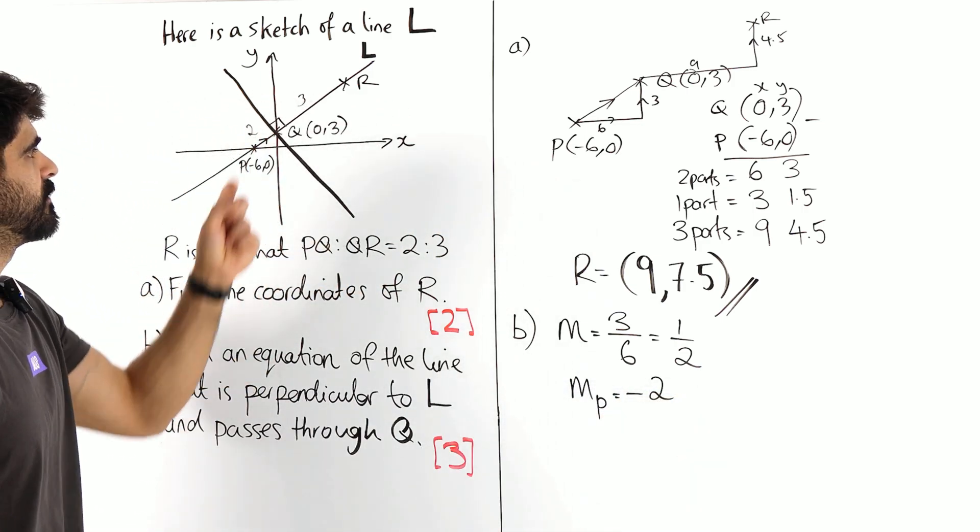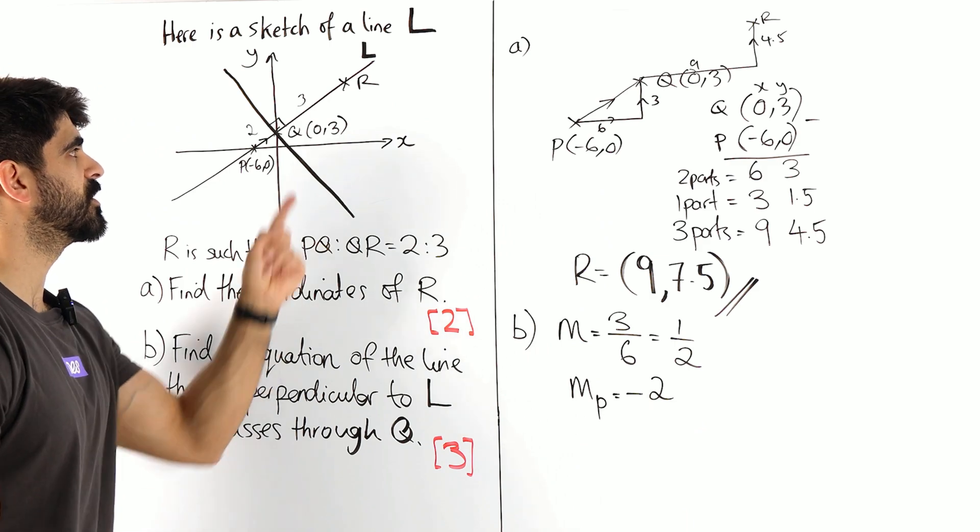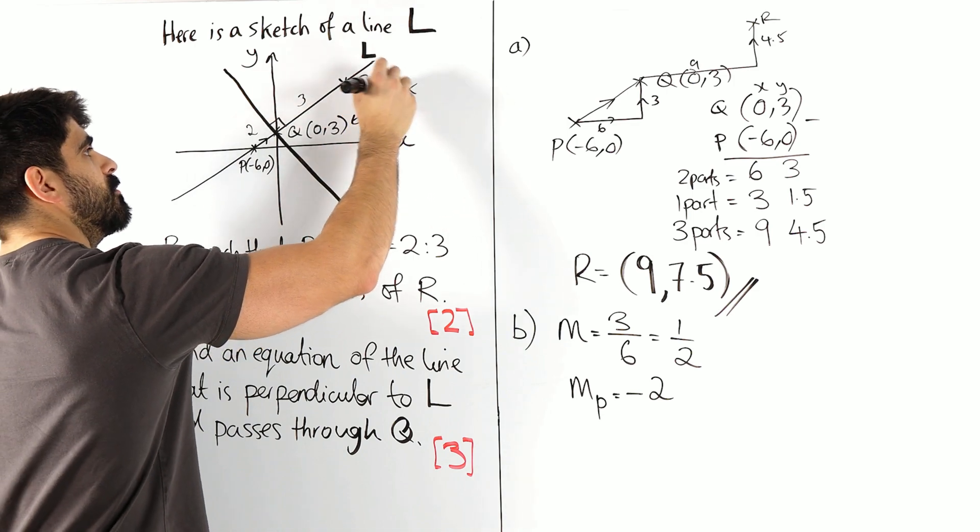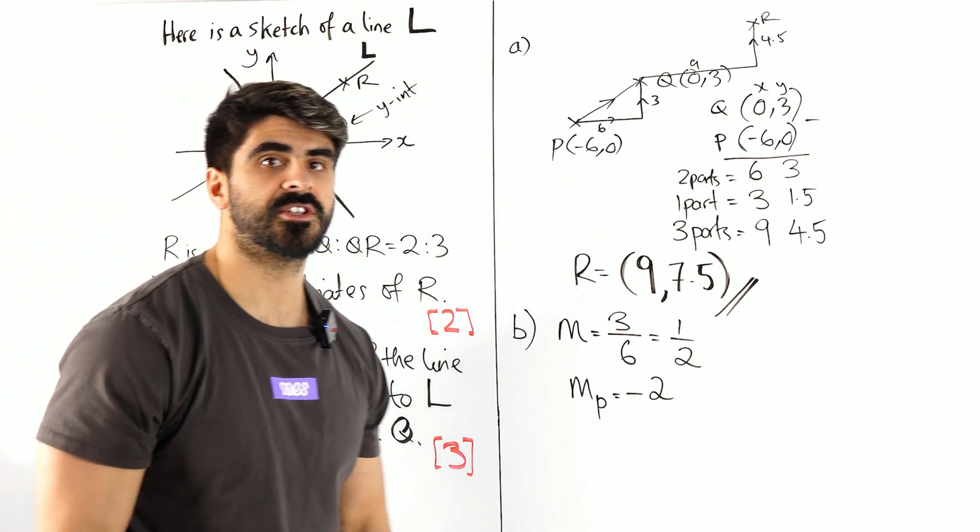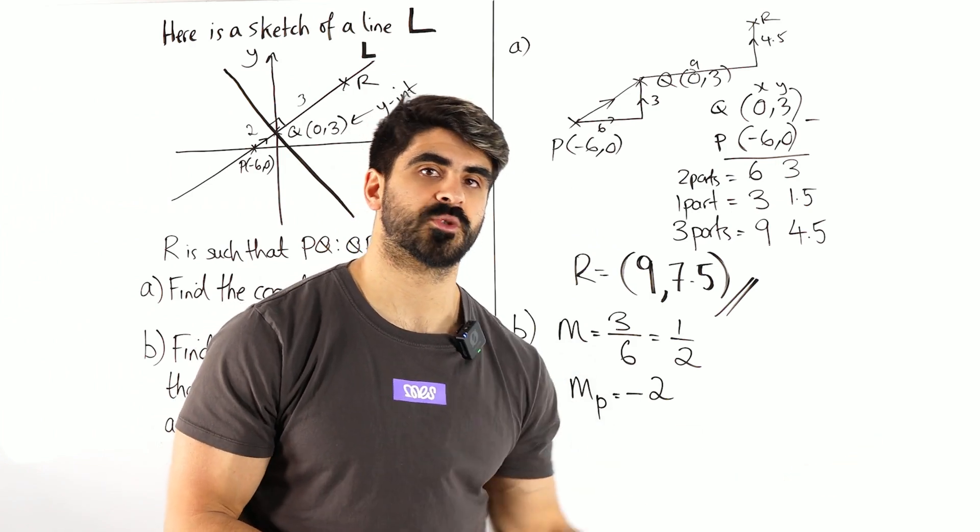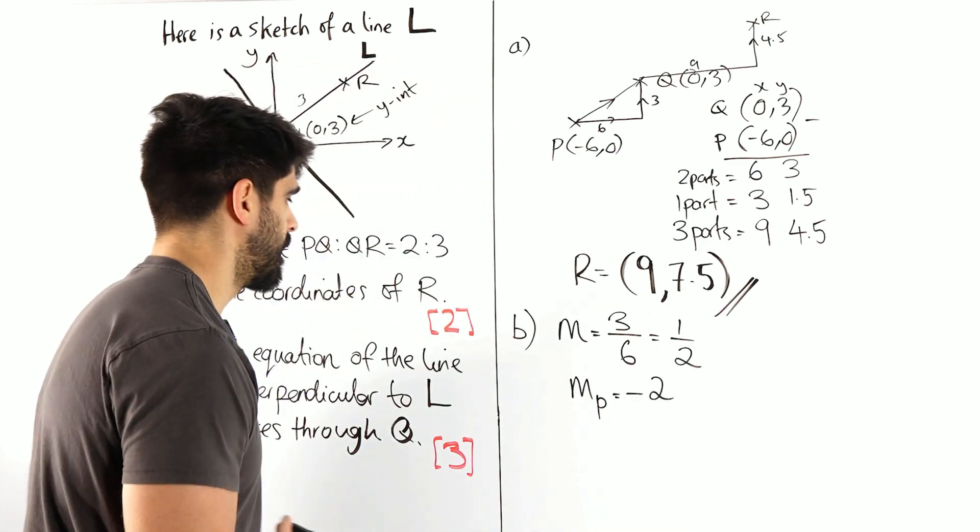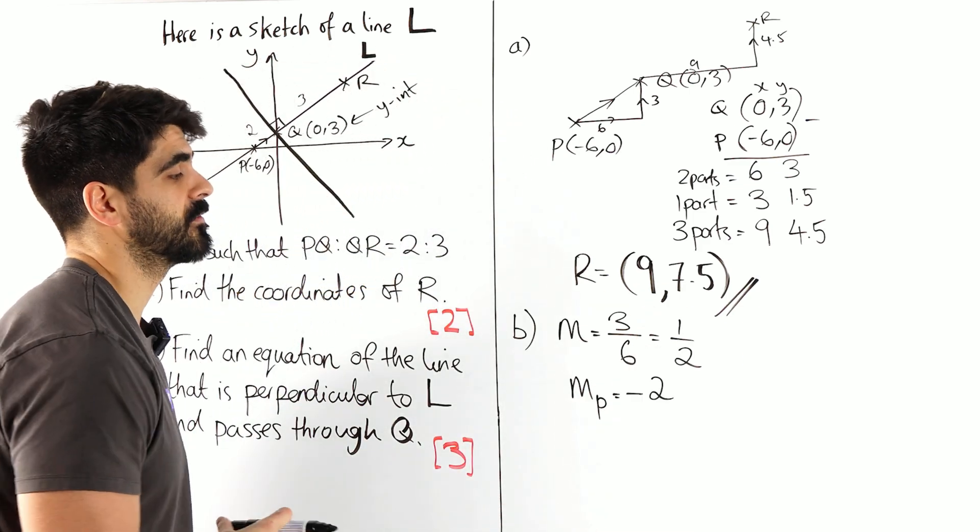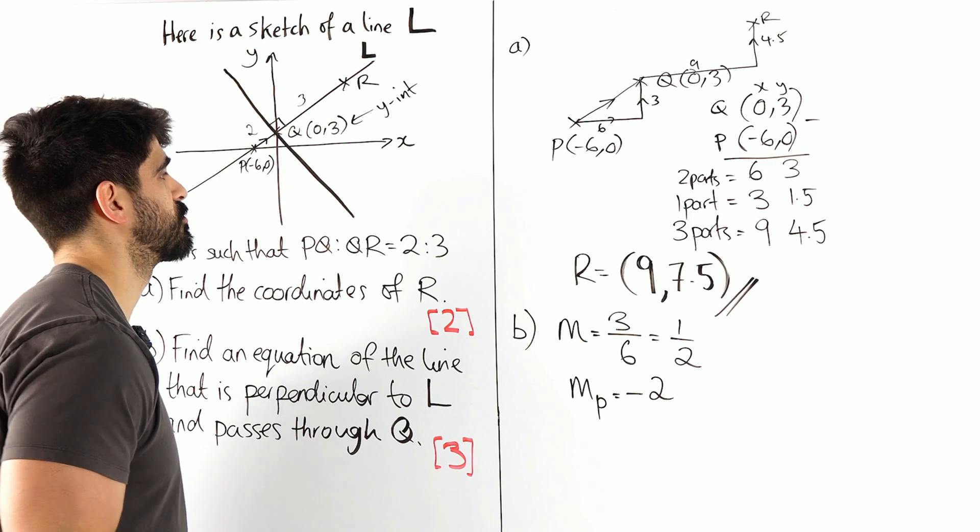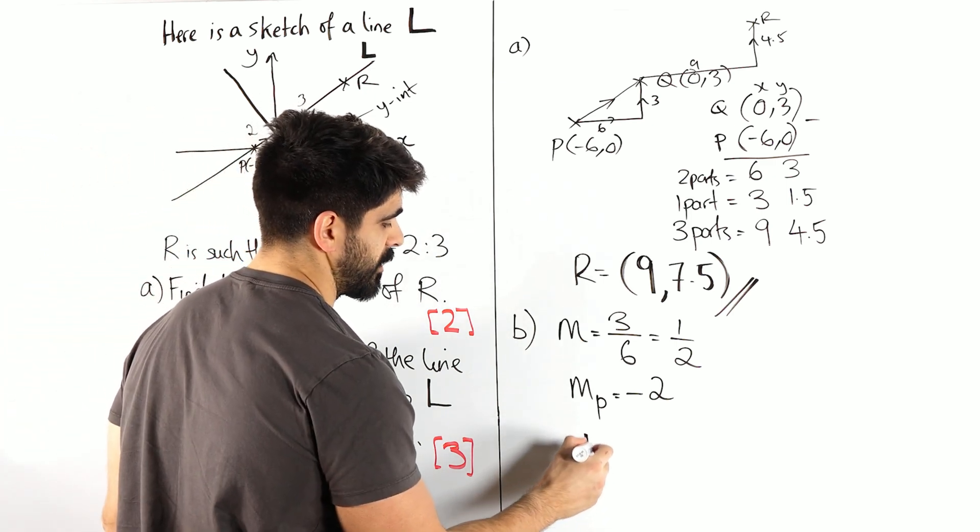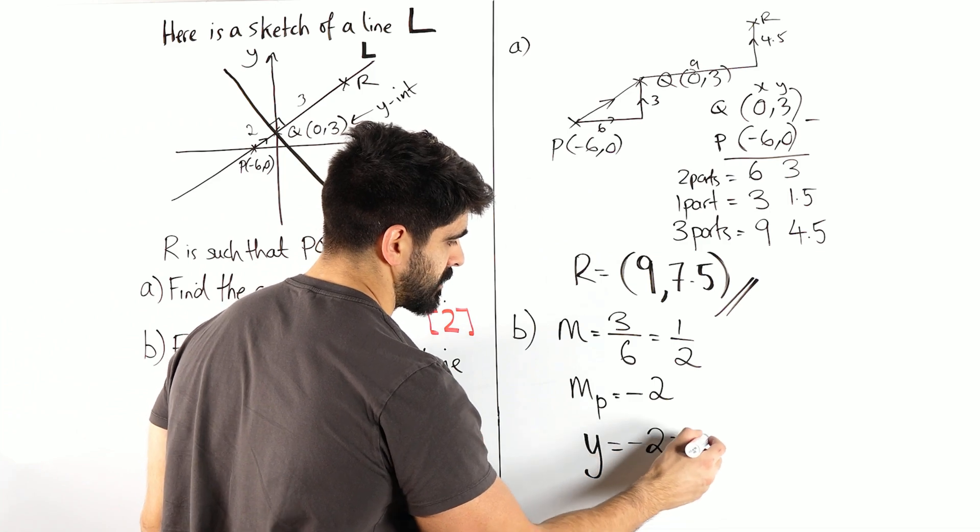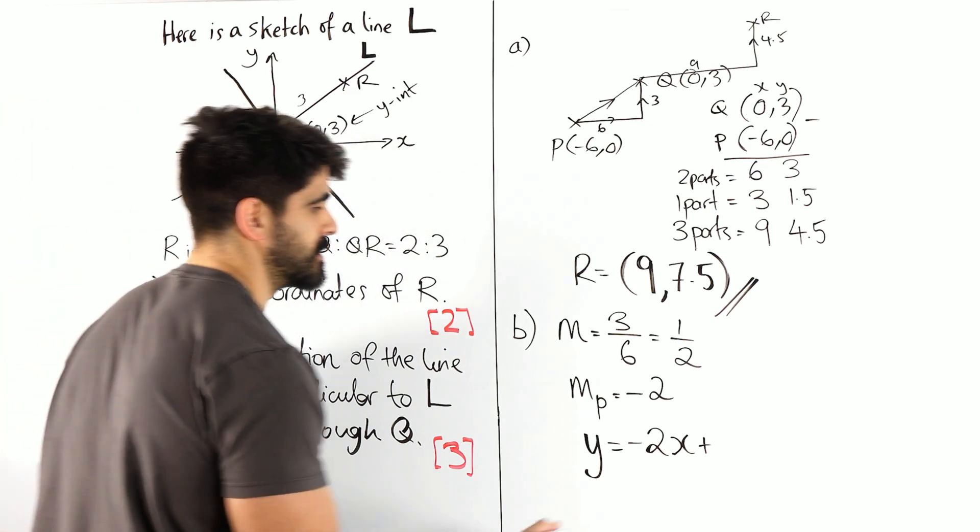And then finally, we have this point Q. Now because it's 0, 3, this is the Y-intercept, which means it's actually easier to use Y equals MX plus C. But my students all use Y minus Y1 is M times X minus X1. And they know that that's a very easy formula to use. But in this situation, because you have the Y-intercept 0, 3, you can just write down the equation straight away. Y is the gradient, so MX plus the Y-intercept, which is 3.